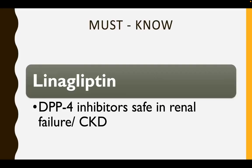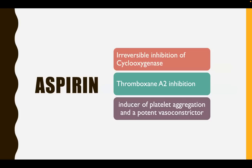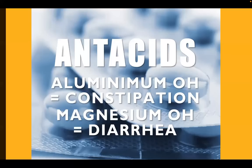Linagliptin is the DPP-4 inhibitor which is safe in patients with renal failure or chronic kidney disease. What about aspirin? It causes irreversible inhibition of cyclooxygenase. It also inhibits thromboxane A2, and the inhibition of thromboxane A2 is responsible for its antiplatelet aggregation properties.